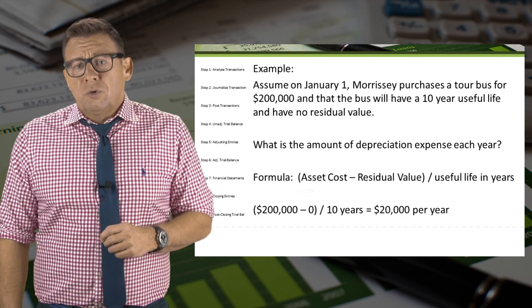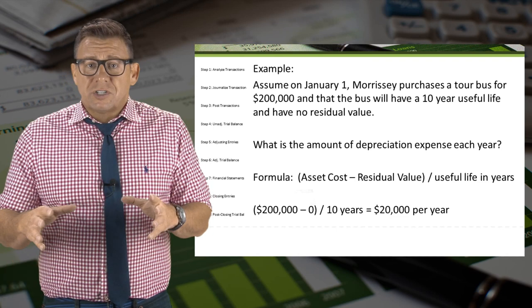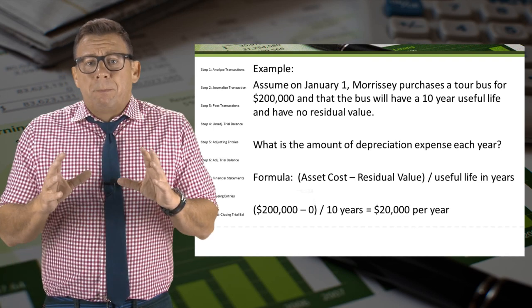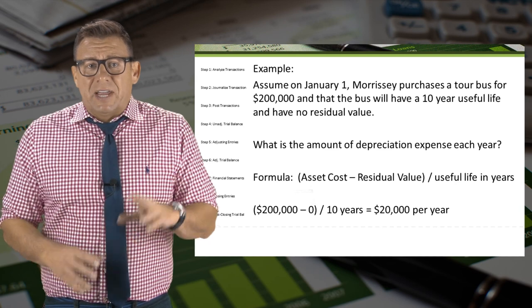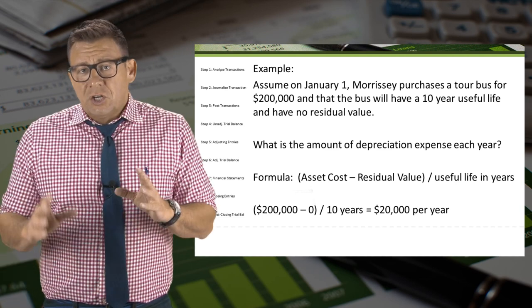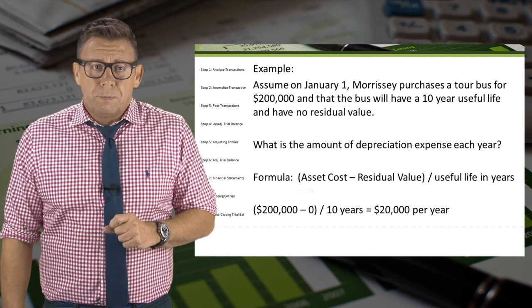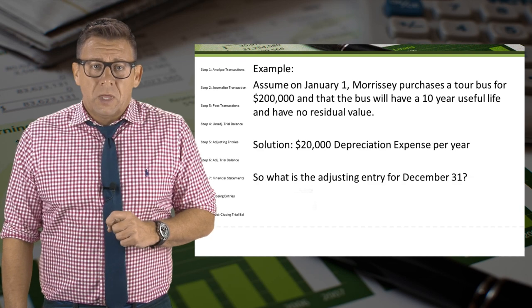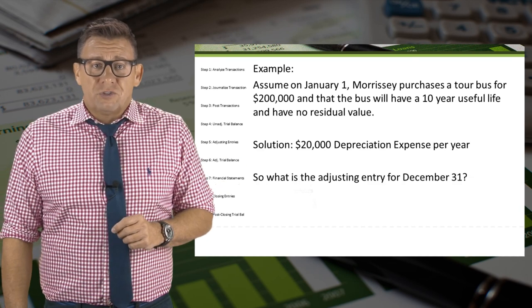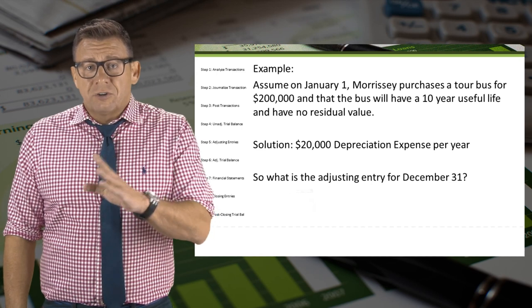In our example, assume that on January 1, Morrissey purchases a tour bus for $200,000, and the bus will have a 10-year useful life and no residual value. That works out to be $20,000 of depreciation expense each year for 10 years.